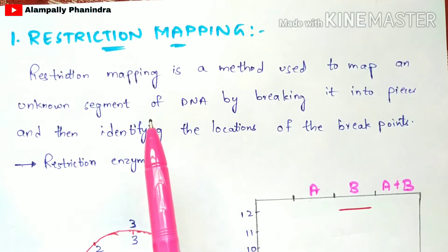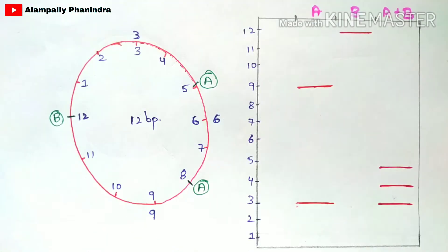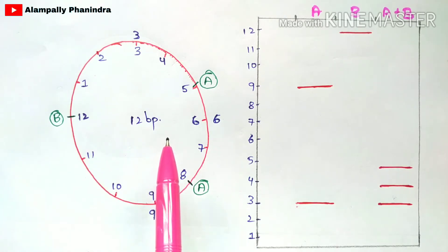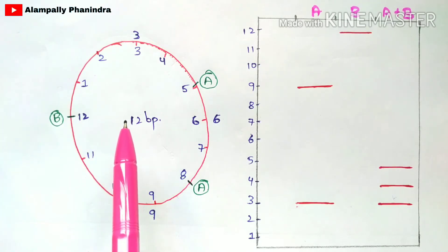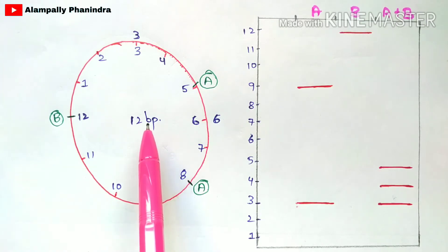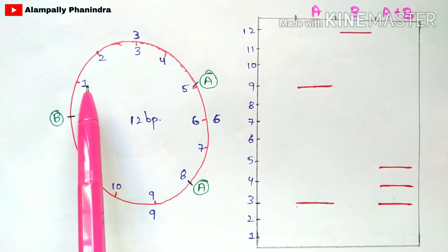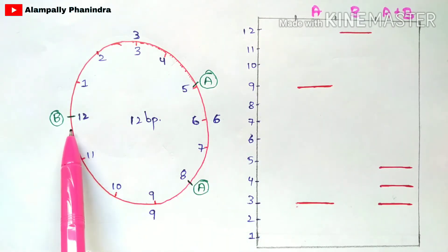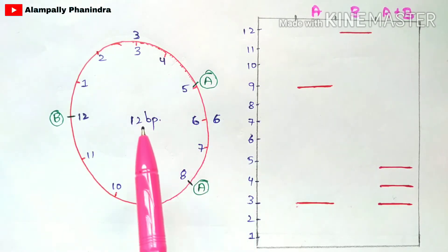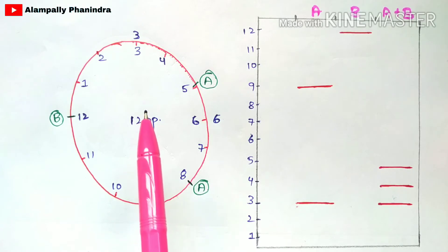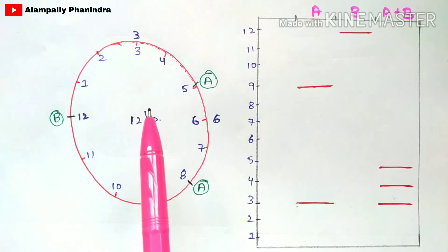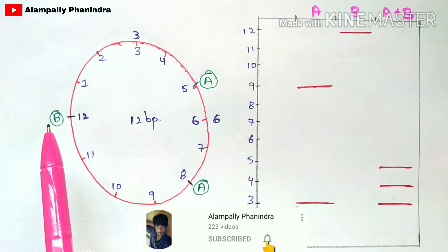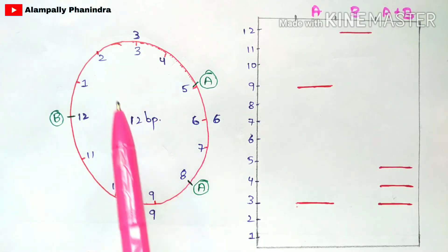Let us consider a plasmid DNA of a bacteria — a circular DNA. This circular DNA consists of 12 base pairs, meaning 12 nucleotide base pairs. The nucleotides are numbered first through twelfth in this circular DNA. The restriction enzymes we are going to apply are restriction enzyme A and restriction enzyme B — two restriction enzyme A sites and one restriction enzyme B site. We will look at two cases.